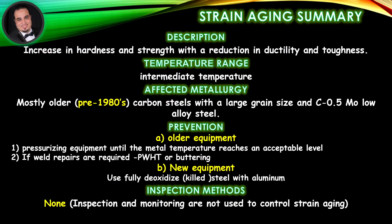Strain aging summary — Description: increase in hardness and strength with a reduction in ductility and toughness. Temperature range: intermediate temperature. Affected metallurgy: mostly older, pre-1980 carbon steels with a large grain size and carbon-½-molybdenum low alloy steel.